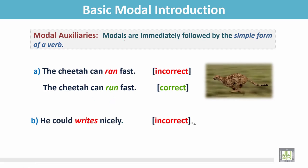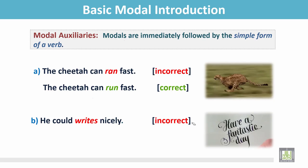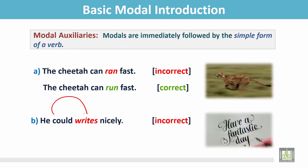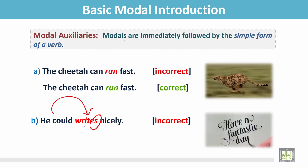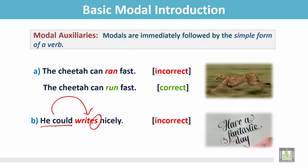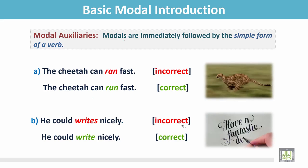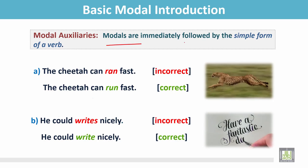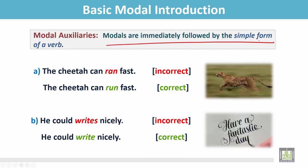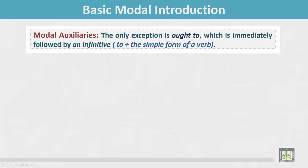Another example: 'He could writes nicely.' In this sentence, after the modal the verb has a final S, and even though the modal is in the past form, the sentence is incorrect. The correct sentence is 'He could write nicely.' Modals are immediately followed by the simple form of a verb.